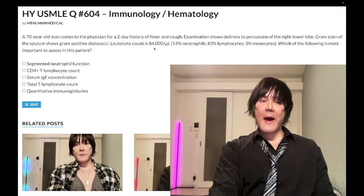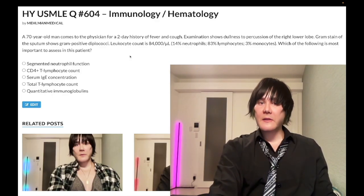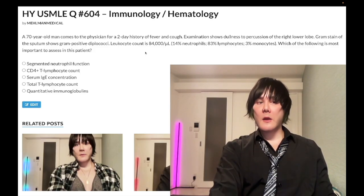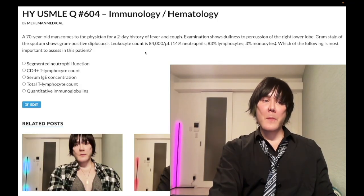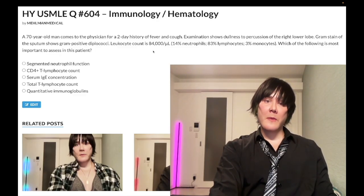How high should the leukocyte count be in a bacterial infection? With a simple pneumonia it should be in the teens — 13,000 to 18,000. If septic, maybe in the twenties. Occasionally a leukemoid reaction can cause a very high leukocyte count due to increased release of leukocytes from the bone marrow reserve pool. But when the leukocyte count is super elevated — especially above 50,000 per microliter — you should be thinking leukemia.